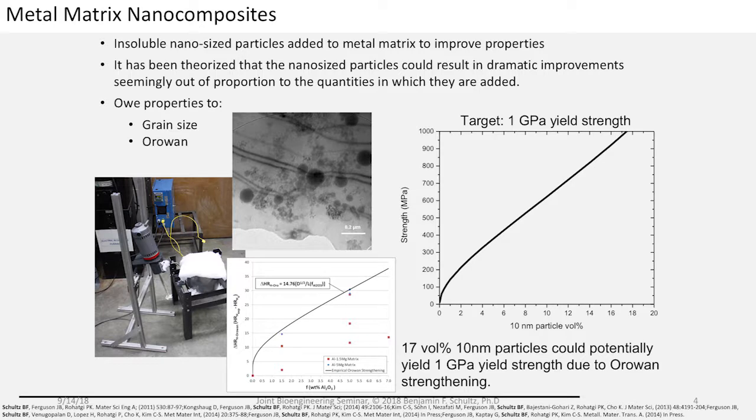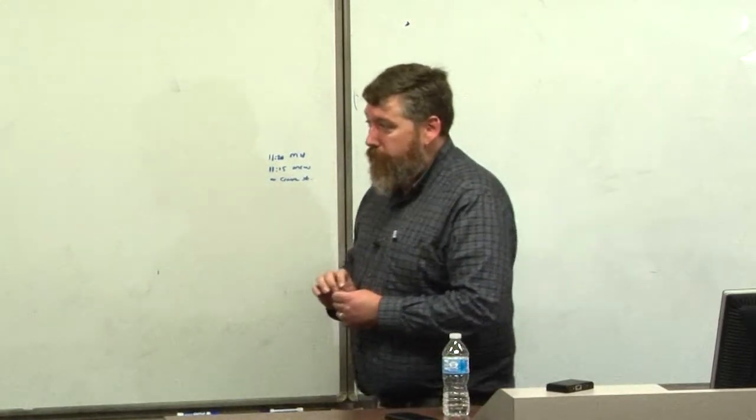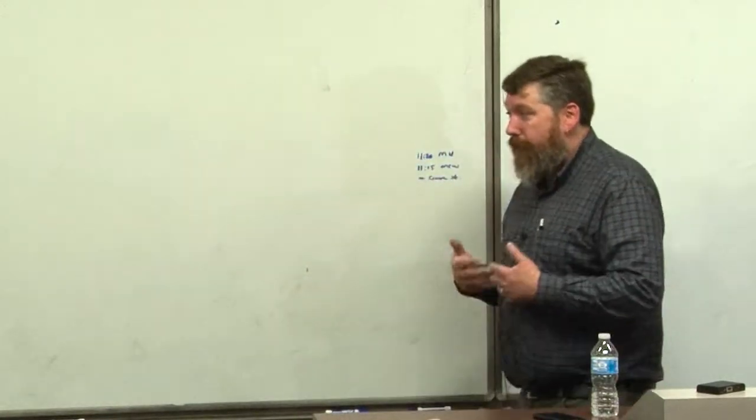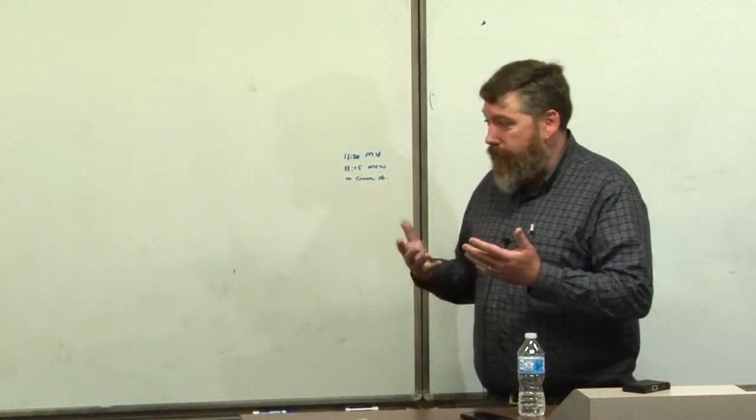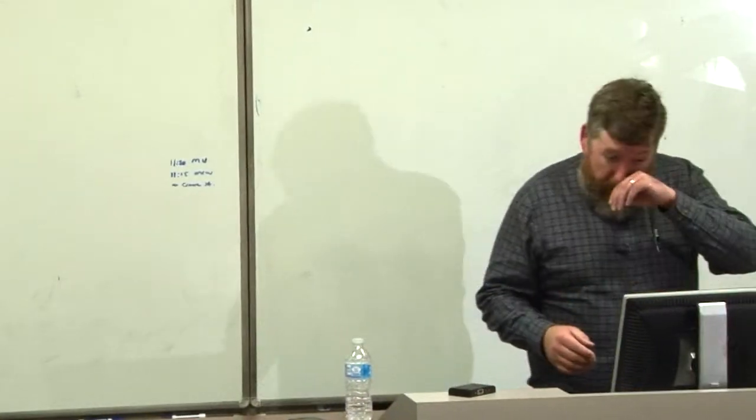My dissertation was on metal matrix nano composites and the promise with these materials, rather than using micro size reinforcements, I'm using nano size reinforcements that can reduce the grain size and also strengthen the material through processes that we describe as Orowan strengthening. If you were able to get a composite where you have about 17 volume percent of a 10 nanometer size particle fully dispersed into the composite, we could get a 1 gigapascal strength in aluminum, which is stronger than any aluminum and rivaling steel.